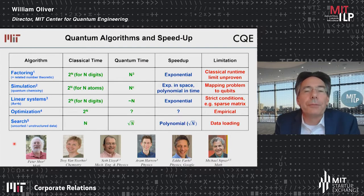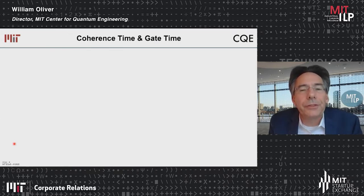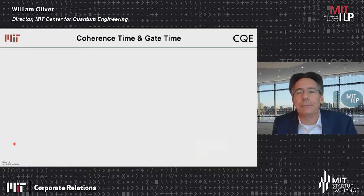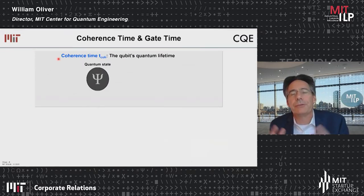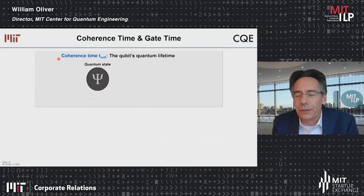There's a lot of promise to quantum computing. So what's the problem — why don't we have one today? It comes down to two characteristic times. One is the coherence time and the other is the gate time. The coherence time is the quantum bit's quantum mechanical lifetime — how long its quantumness remains viable. If we put a qubit in a quantum state Ψ, at time t=0 we know exactly what it is, but the qubit is always interacting with its environment.